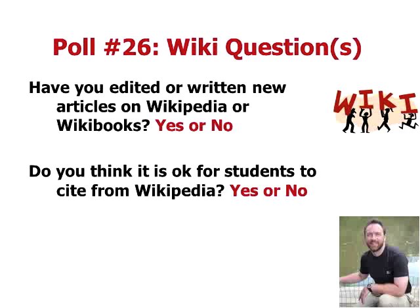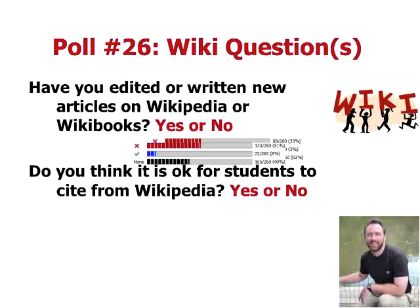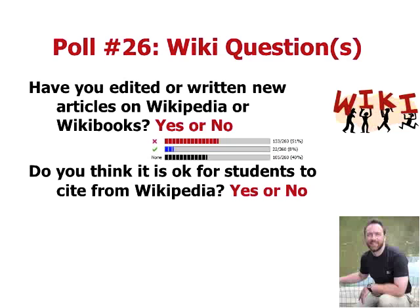Wiki questions: have you edited or written a Wikipedia article or Wikibook? Yes or no? Not many people have. How about the next question: do you think it's okay for students to cite articles from Wikipedia? Four years ago it was definitely no. Now there's much more balance — some people say it's okay to use as a starter, but not okay to cite in an article unless it's the only source available. Many times Wikipedia is wrong — it lists me as a well-known instructional designer, and I hate instructional design.